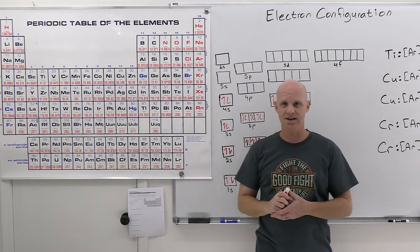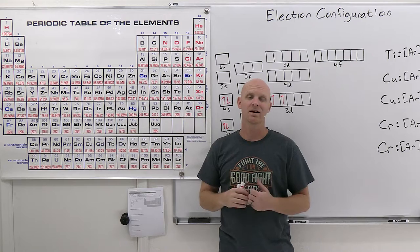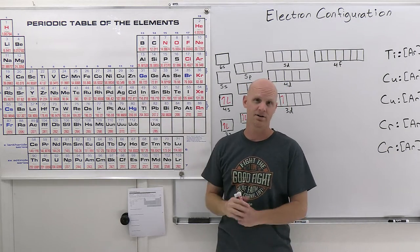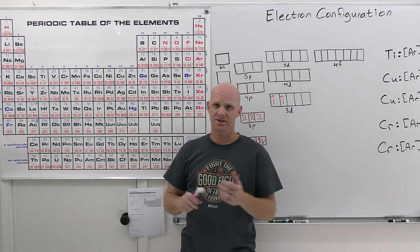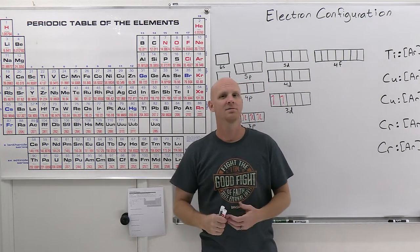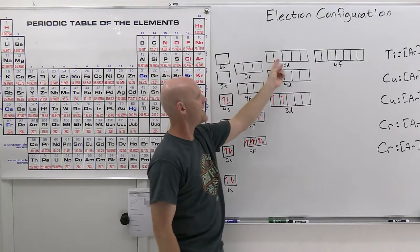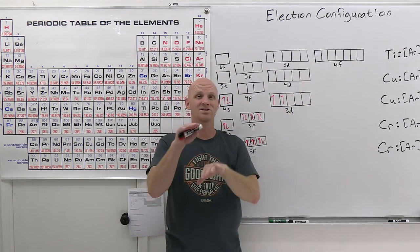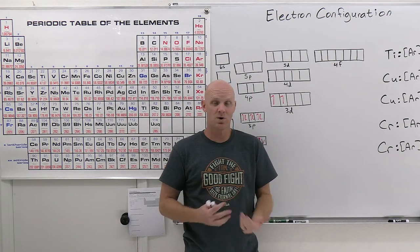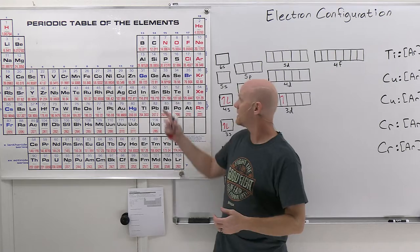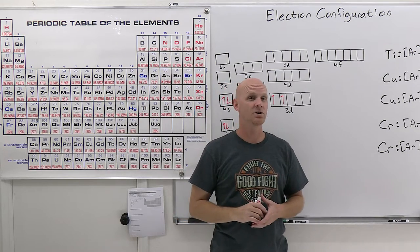There are actually several other exceptions, but probably none you'll be on the hook for. On homework they can ask any configuration since you can look it up, but on a test the exceptions will probably be one of those five. Platinum is an exception that shows up commonly on homeworks but not as often on tests because it's hard to predict. Once you get into bigger elements where 6s, 5d, and 4f are all very similar in energy, how they fill in can change — and there's no easy pattern to predict. So to summarize the five exceptions: copper, silver, gold, chromium, and molybdenum.